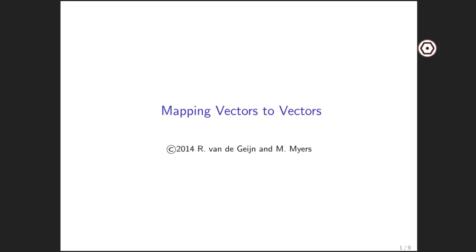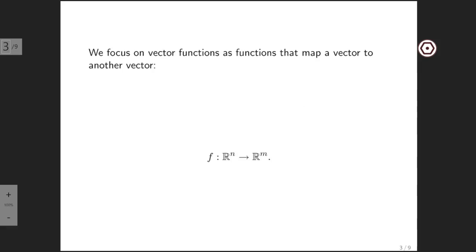Now we're ready to look at functions that map vectors to vectors. Next week we'll look at a special case of those kinds of functions called linear transformations. What we're going to be looking at are functions that map a vector of size n to a vector of size m.